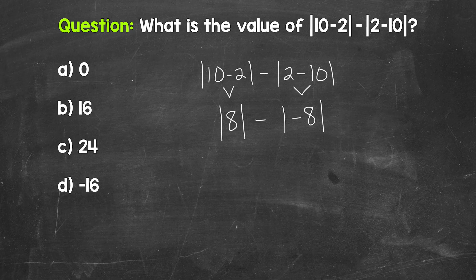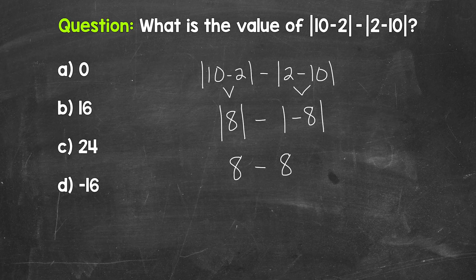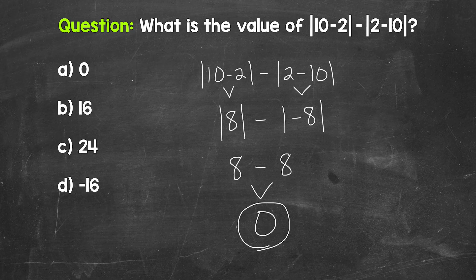Remember, the absolute value of a number is the distance that number is from 0. So the absolute value of 8 is 8, minus the absolute value of negative 8, which is also 8 — that's the distance negative 8 is from 0. Think of a number line when it comes to absolute value and how far the number is from 0. Now all we need to do is 8 minus 8. 8 minus 8 gives us 0, and this is our final answer.